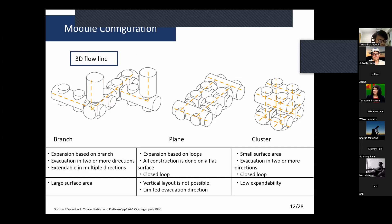Under low gravity, you can move vertically. These are models of branch, plane, and loop assembled in 3D and their classification. Branch has expansion based on branching with high expandability but large surface area. Plane has expansion based on loops with closed loops, but it has limited evacuation directions. Cluster has small surface area and can close the loop but has low expandability.